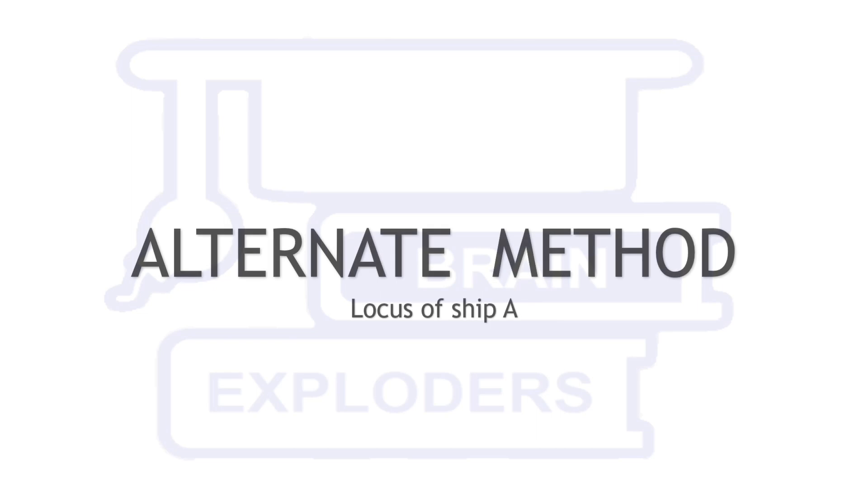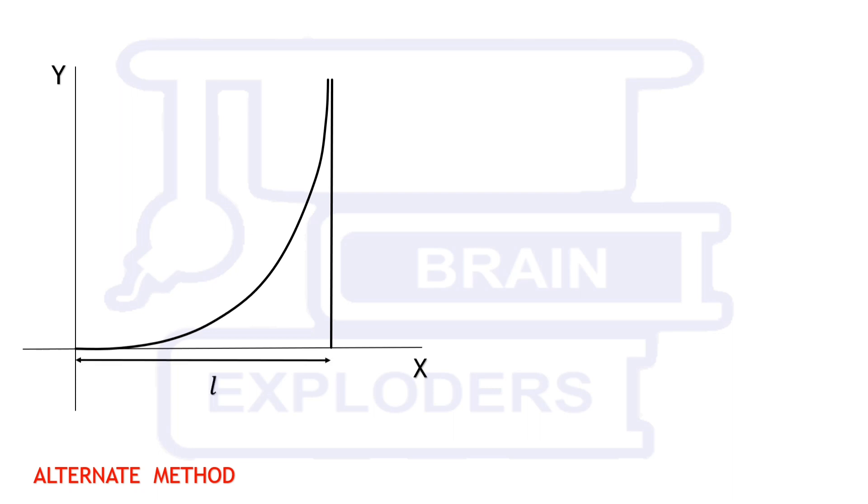There are other methods also which can tell us the locus of the path travelled by ship A. Suppose ship A was initially on origin and ship B was at a distance of L from ship A on positive x-axis. After some time, their positions are A and B.